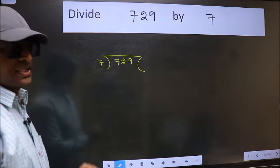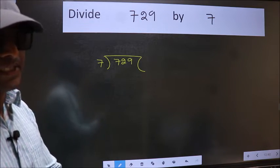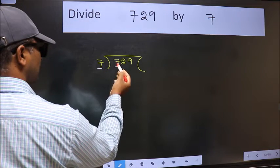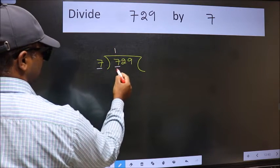This is your step 1. Next, here we have 7 and here 7. When do we get 7 in the 7 table? 7 once 7.